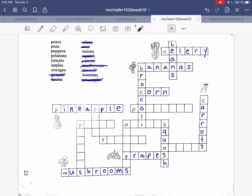For the words we have left, we have pears, peas, peppers, potatoes. Lots of P words. Tomatoes, apples, oranges, onions.